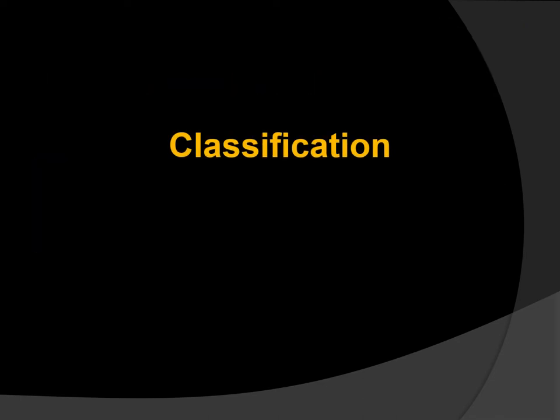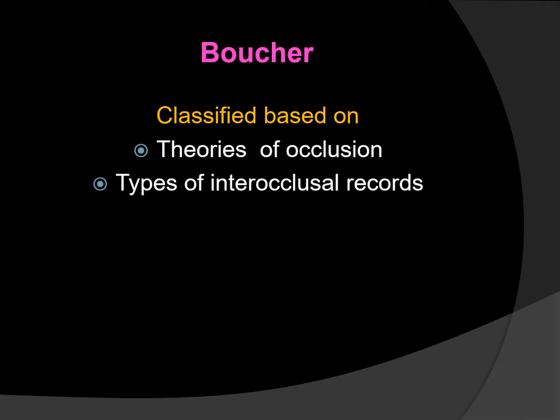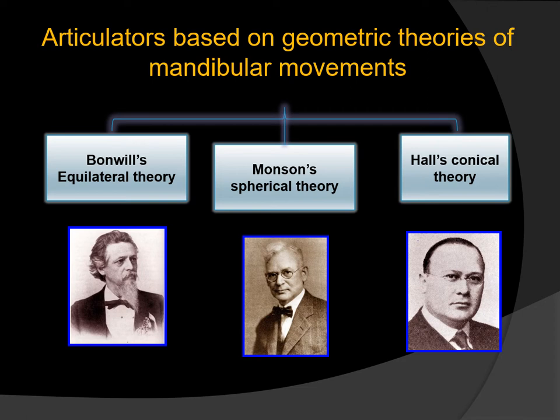There are numerous classifications of articulators, and the four important ones are: based on theories of occlusion; based on the type of interocclusal record used; based on the ability to simulate jaw movements; and based on adjustability. Boucher classified articulators based on theories of occlusion as well as types of interocclusal records. The three geometric theories of mandibular movements are Bonneville's equilateral theory, Monson's spherical theory, and Hall's conical theory, and articulators were classified based on these theories.